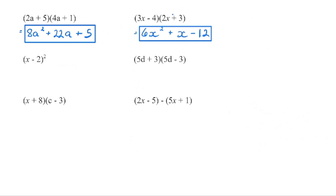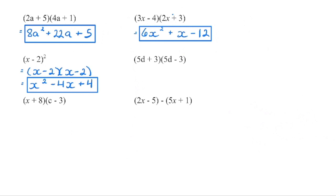When we see something like (x−2)², we know we have the base times itself. This is what we call a binomial squared. When we FOIL this out, x times x is x squared, then negative 2x minus 2x gives us negative 4x, and negative 2 times negative 2 is positive 4. The outside and inside products will always be the same when squaring a binomial, so we can take the product of those two terms — negative 2 times x is negative 2x — and double it to get negative 4x.